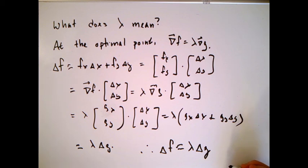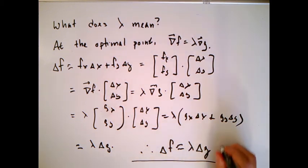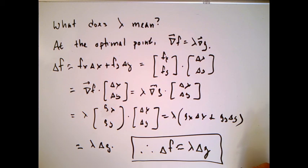This says basically if we change the budget just a little bit, we shouldn't have to run through the whole process again to get the exact new optimum point. We should be able to calculate the change in the value and the change in the optimal profit just by taking our value of lambda and multiplying by the change in the budget.